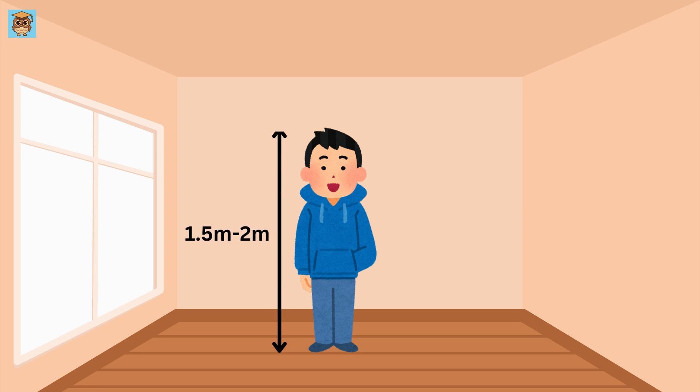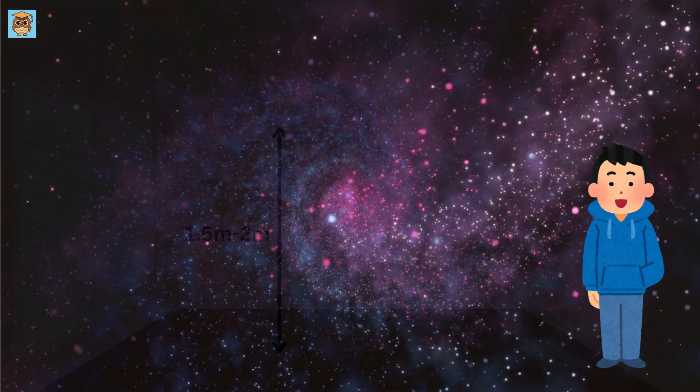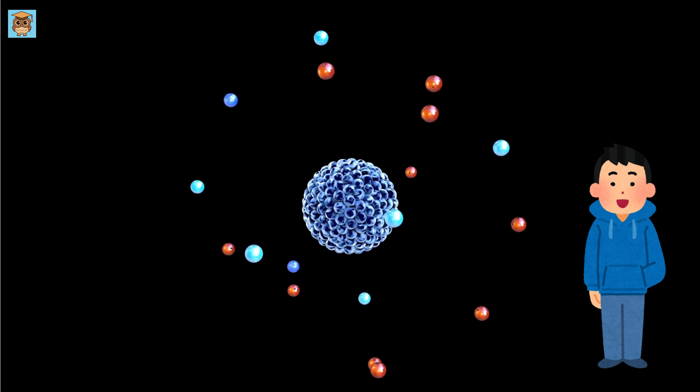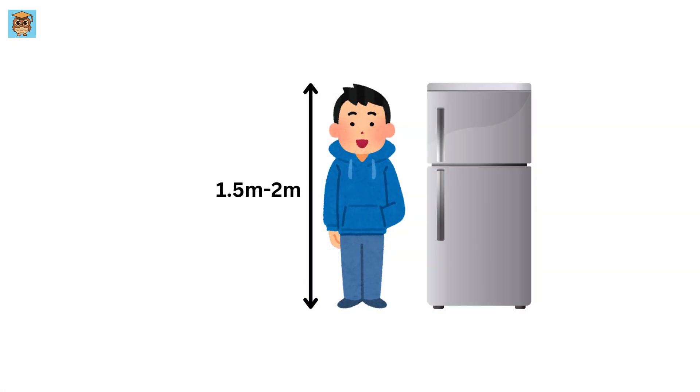Let's say you're about one and a half meters or maybe two meters tall. Pretty normal, right? But have you ever wondered how you compare to some of the biggest and smallest things in the universe? A refrigerator is about one and a half meters long, which is almost the same as your height.